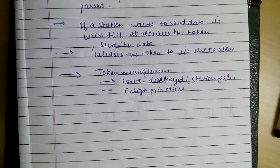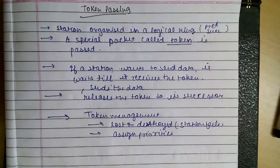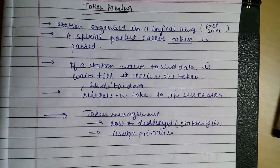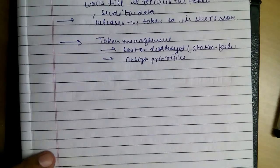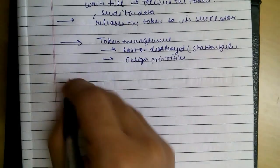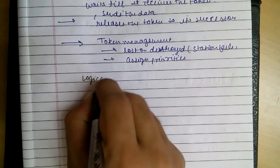We said that stations are arranged in a kind of logical ring. So what kinds of rings are there? Let's see the logical rings.